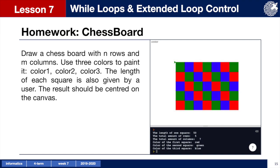Before we end our lesson, let's solve our last homework together. We should draw a chessboard with n rows and m columns, using three colors to paint it: color 1, color 2 and color 3. The length of each square is also given by a user. The results should be centered on the canvas.